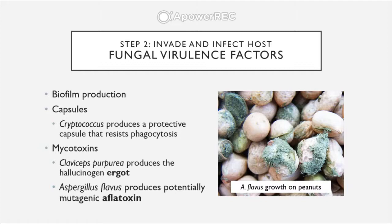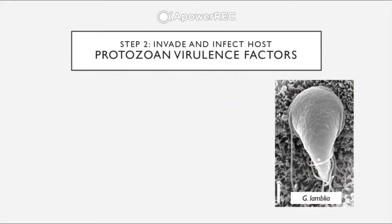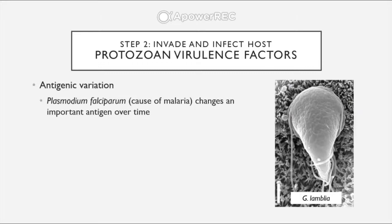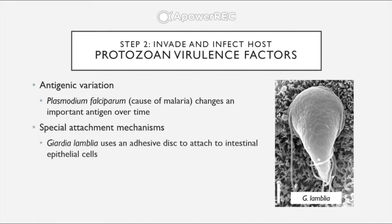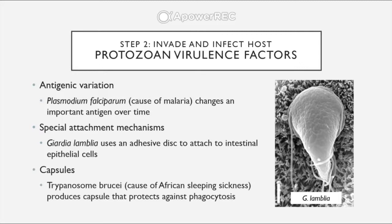Briefly, protozoan virulence factors — these are eukaryotes. We have antigenic variation: Plasmodium falciparum, which causes malaria, can change its important antigens over time, so you cannot develop full immunity to malaria. We have special attachment mechanisms: Giardia lamblia uses an adhesive disc to attach to intestinal epithelial cells. Finally, capsules: Trypanosoma brucei, which causes African sleeping sickness, can produce capsules that protect it from phagocytosis.